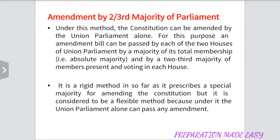Now let us see the amendment by two-third majority of the Parliament. Under this method, the Constitution can be amended by the Union Parliament alone. An amendment Bill can be passed by each of the two Houses of Union Parliament by a majority of its total membership and by a two-third majority of the members present and voting in each House. It is a rigid method in so far as it prescribes a special majority, but it is considered a flexible method because the Union Parliament can alone pass any amendment.